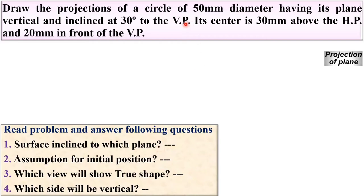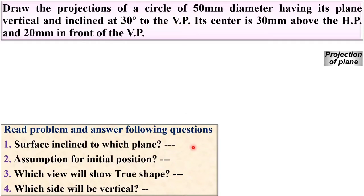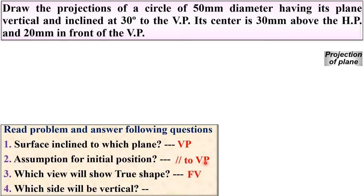Surface inclined to which plane? The circle is inclined at 30 degrees to the VP, so the answer is VP. Next, for the initial position assumption: since the surface is inclined to VP, you should assume the plane is parallel to VP initially. If the surface were inclined to HP, you would assume the plane is parallel to HP — keep this important point in mind. Now, if the plane is parallel to VP, you will get the true shape in the front view; if parallel to HP, you get the true shape in the top view.